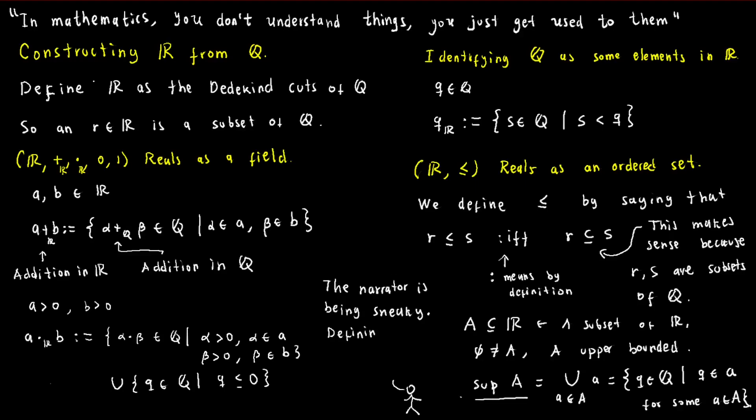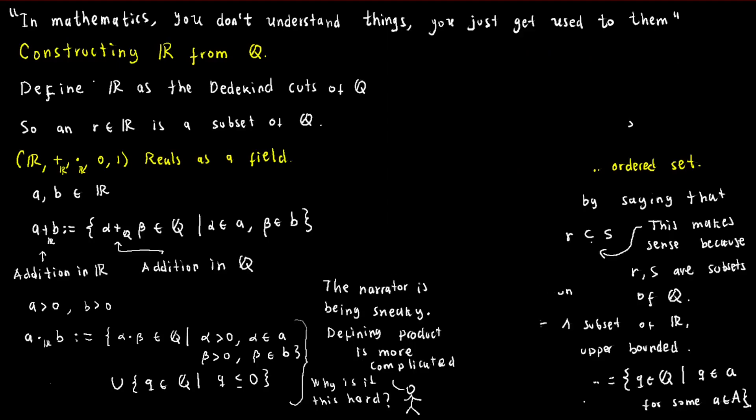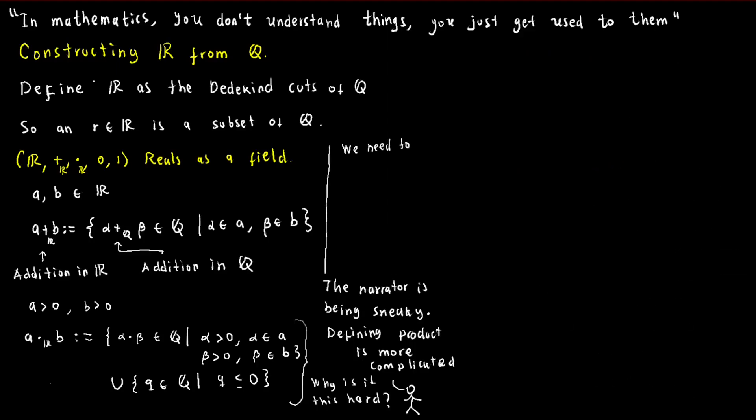Similarly, multiplication of a and b is defined as the set of all products of elements from their corresponding sets. To ensure that addition and multiplication satisfy the field axioms, we need to verify that they are closed under addition and multiplication, are associative, commutative, and have identity and inverse elements. Additionally, distributivity must hold between addition and multiplication.